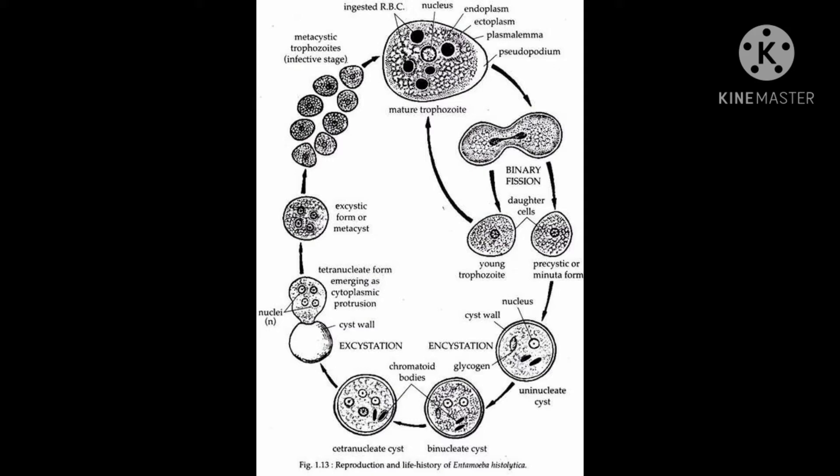The precystic stage contains chromatoid bodies and glycogen granules. During the trophozoite stage, it feeds upon the RBCs and the submucosa and mucosa layers of the intestine, and then it converts into the precystic stage by undergoing binary fission.